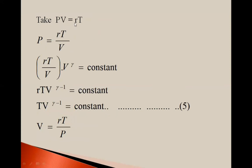Now taking PV = RT, we get P = RT / V. Substituting into P V^gamma = constant: (RT / V) × V^gamma = constant, so R × T × V^(gamma − 1) = constant. Therefore T × V^(gamma − 1) = constant — this is equation 5.